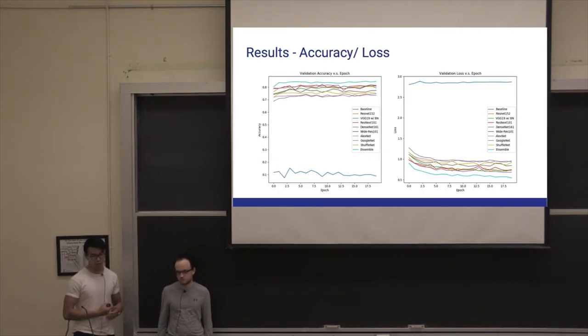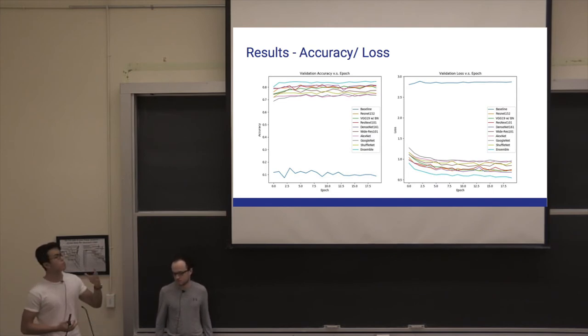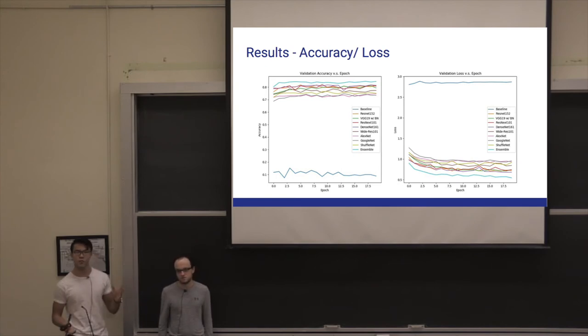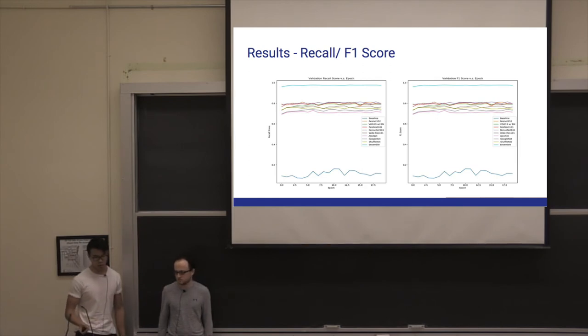Here are some graphs pertaining to the validation accuracy and the losses with respect to the baseline, the individual transfer learning networks, as well as the ensemble network. From here we can see that the individual transfer learned networks performed decently well, however the ensemble network combining all eight networks was able to perform even better. The baseline model was a simple convolutional neural net architecture used in assignment 4 with four convolutional layers and four fully connected layers. As we can see, it struggled to attain decent performance. Here are some graphs pertaining to the recall score, telling a similar story.